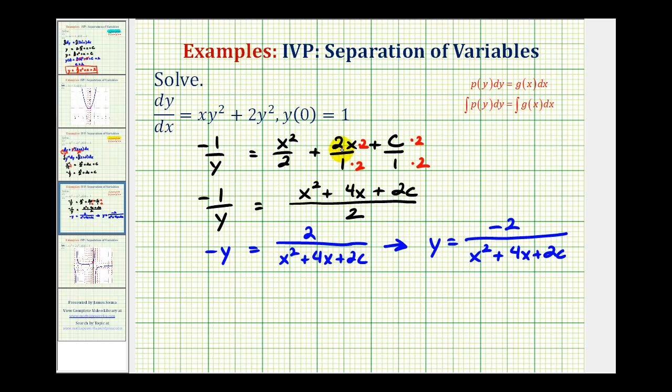So if y of zero is equal to one, that means we can go ahead and replace x with zero, and know this function must equal one. So that would give us negative two divided by, this would be zero squared, plus four times zero, plus two c must equal positive one.